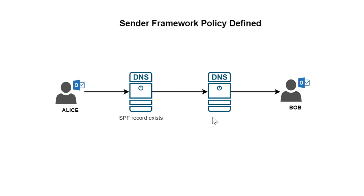Alice's server will provide the SPF record — the list of IPs. Bob's server will check: 'The message you have for me is sent from a certain IP, let me verify if this IP is defined in the SPF record.' Once there is a match between the IP and the list of IPs in the SPF record, Bob's DNS server will relay the message to Bob and the delivery will take place.